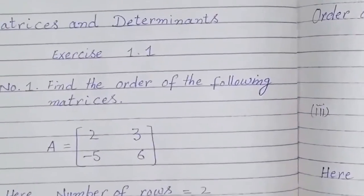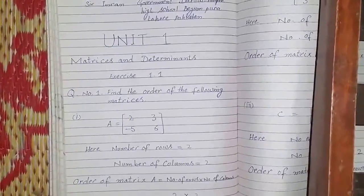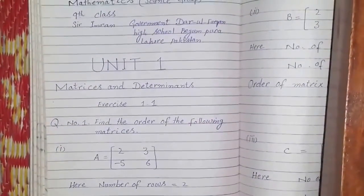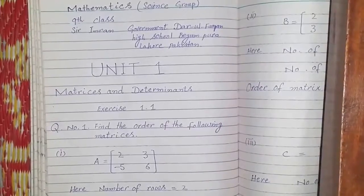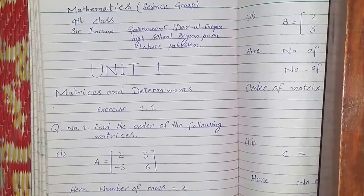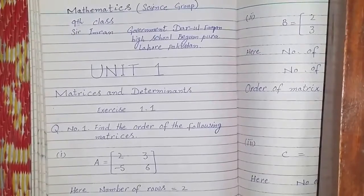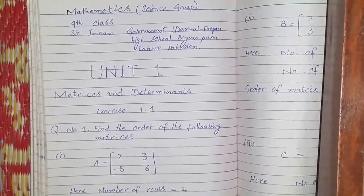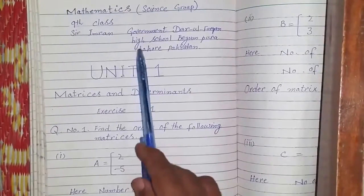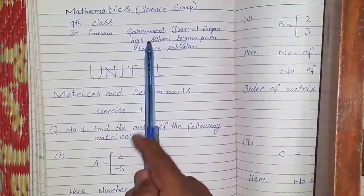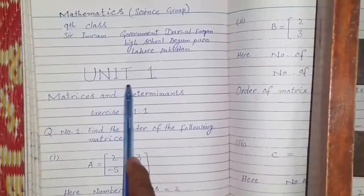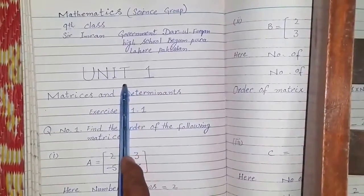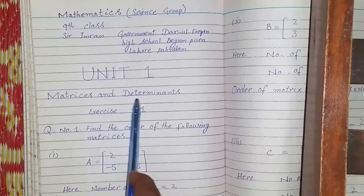Hello viewers, today I am starting a new book that is Mathematics for Science Group, 9th class. My name is Imran and I am a teacher in Government Darul Farqan High School, Begambara Lahore, Pakistan. This is Unit 1 and the name of this unit is Matrices and Determinants.